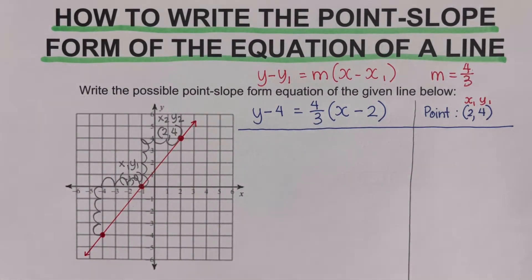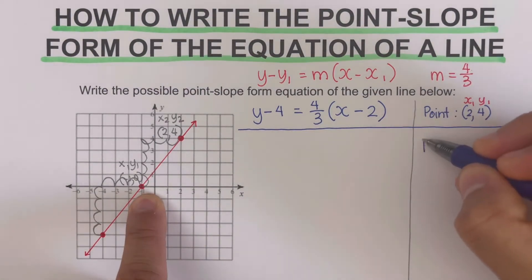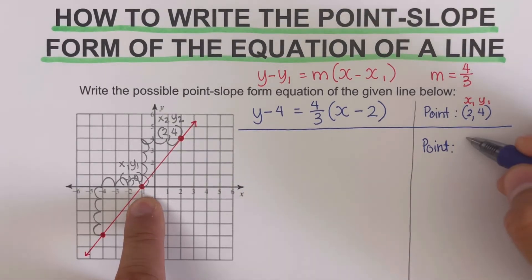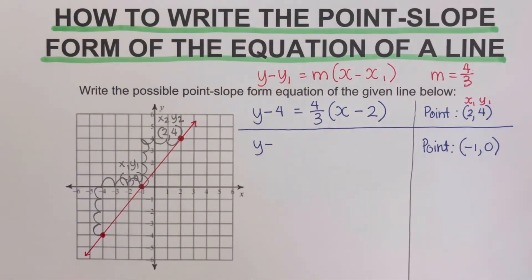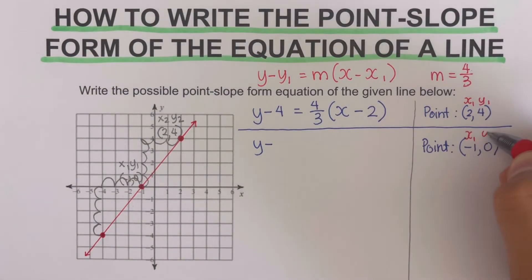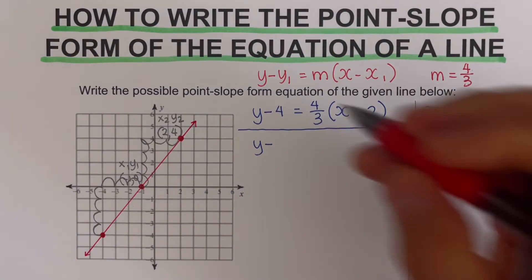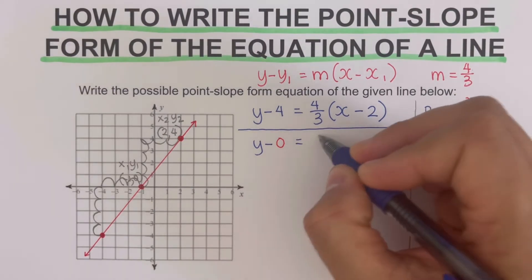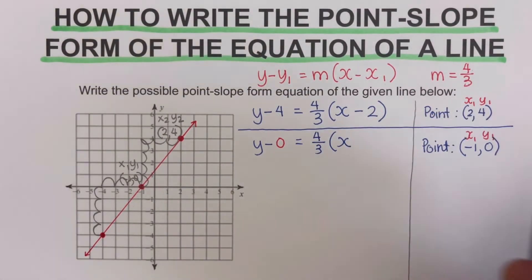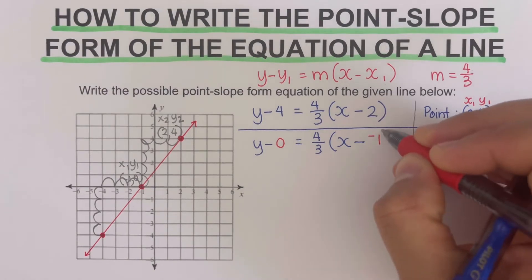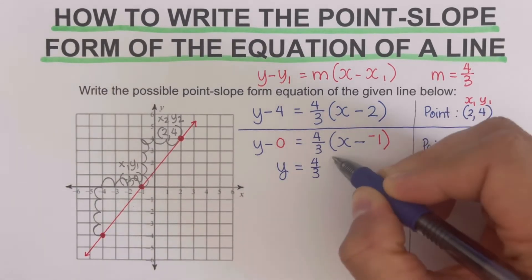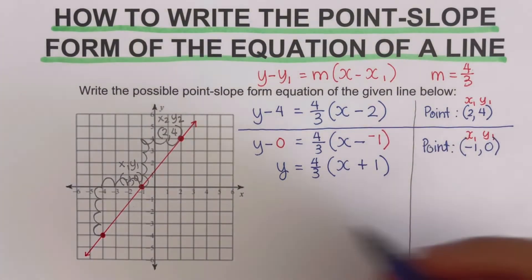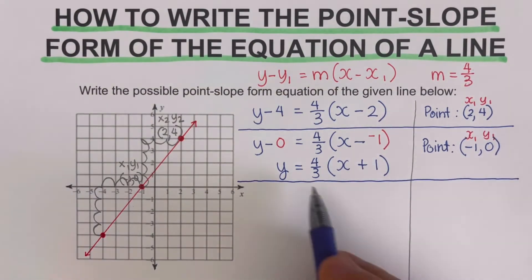Now let's take another point: negative 1, 0. We plug it in — this is our x₁ and y₁, so y₁ is 0: y minus 0 equals 4 thirds times the quantity x minus negative 1. Simplifying, y minus 0 is just y, and x minus negative 1 becomes x plus 1. So this gives us: y equals 4 thirds times the quantity x plus 1. That's another possible equation for this line.